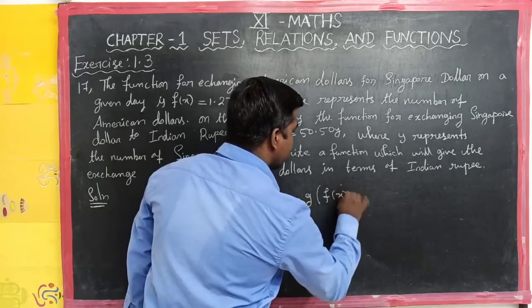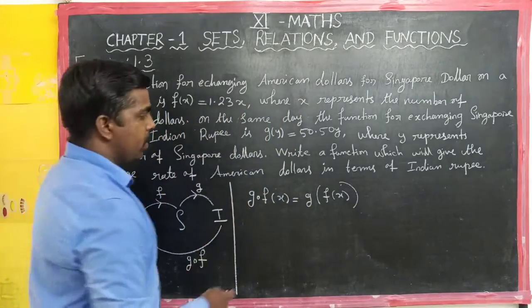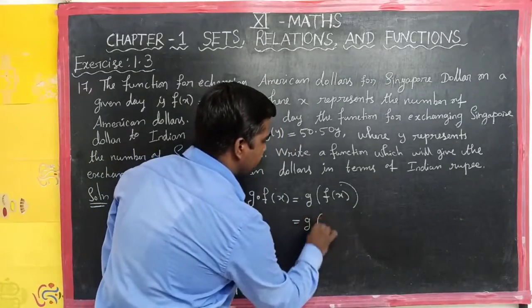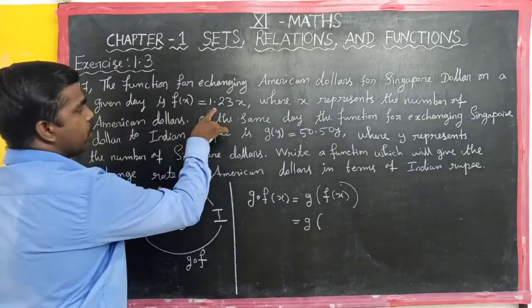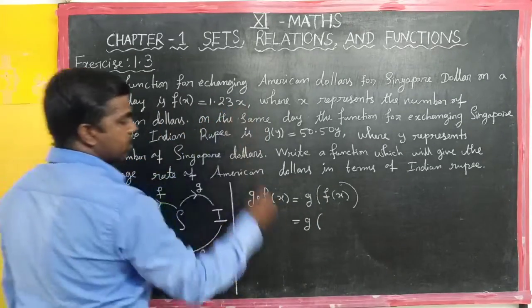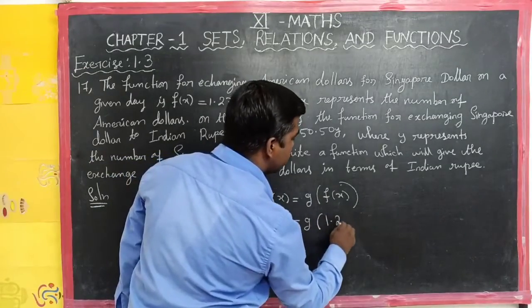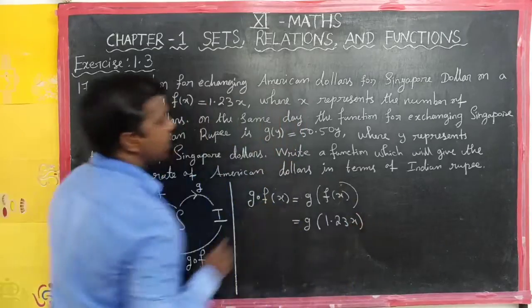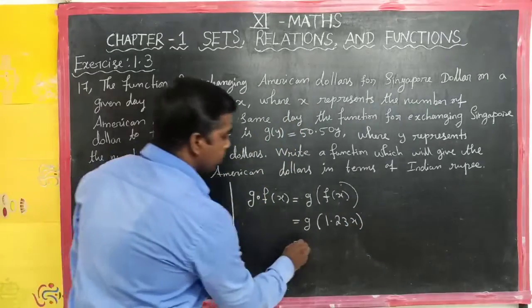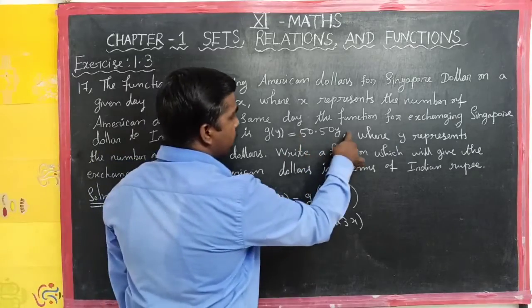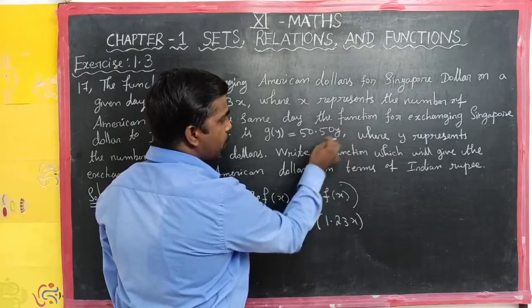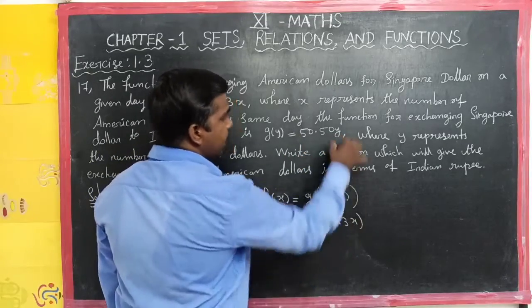G composite F of x is equal to G of F of x. By definition of composite function, G of F of x, the F of x value is 1.23x.